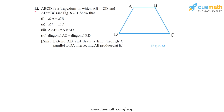Question 12 of the exercise says: ABCD is a trapezium in which AB is parallel to CD, and AD is equal to BC. The non-parallel sides AD and BC of the trapezium are also equal, and such a trapezium is called an isosceles trapezium. We have to show these four things written here.